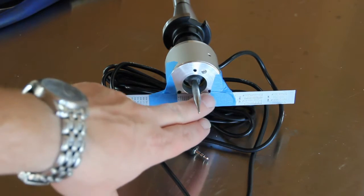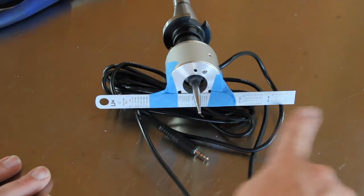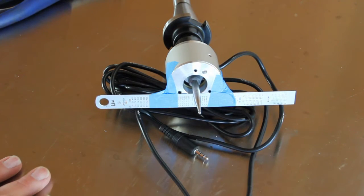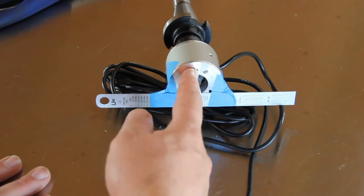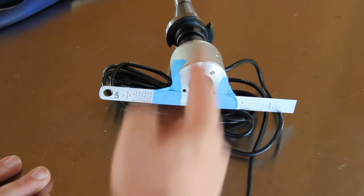So what I'll do first is I'll set these two set screws so that it has got no run out going this way in line with the straight edge. And then I'll adjust the third set screw so that it has no run out running perpendicular to the straight edge.